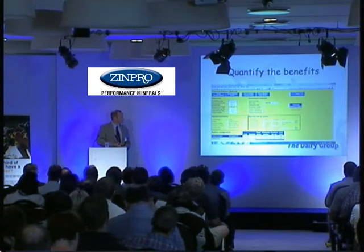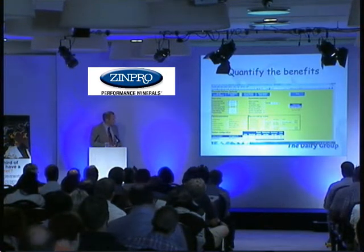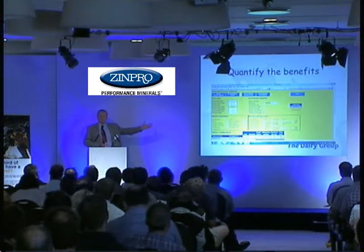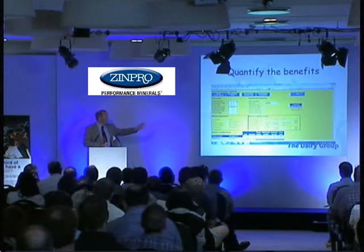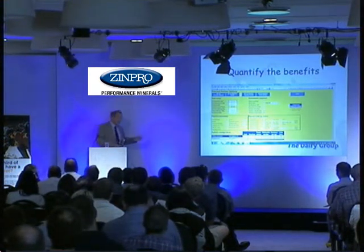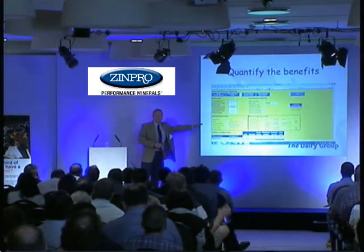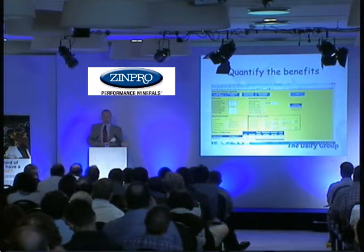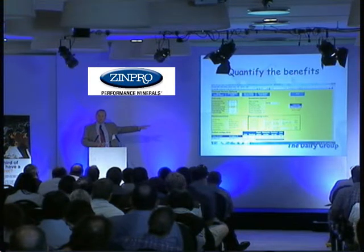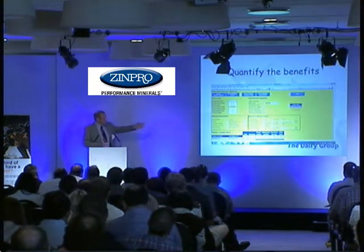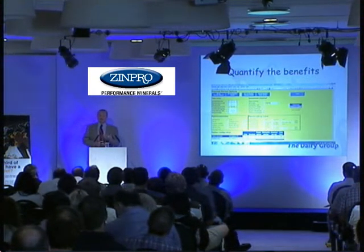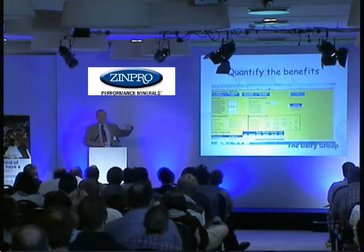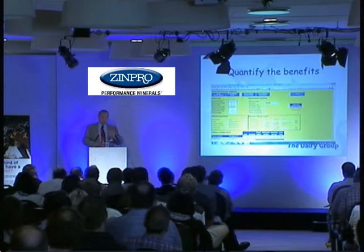DairyCo have a resource that allows you to look at your current milking system and, as a Scotsman, this is the sort of software I like because it allows me to pretend to spend money. You can put in automation that doesn't currently exist on your parlour, knowing how long milking currently takes, and it will recalculate your milking speed. If spending £10,000 on a backing gate reduces milking time by 45 minutes, you can make a fully justified appraisal of that investment.